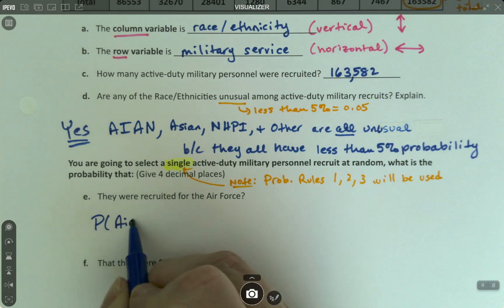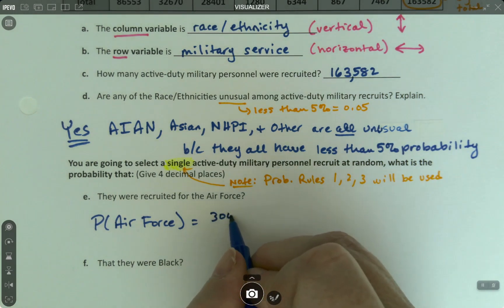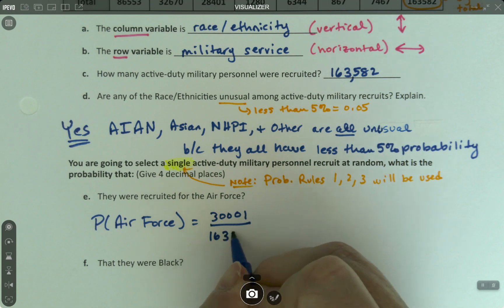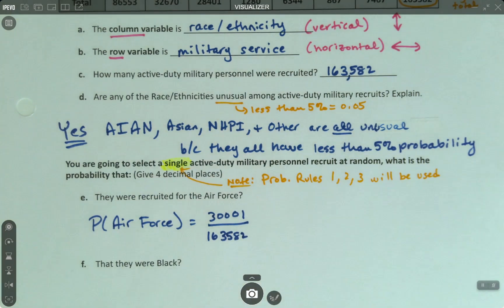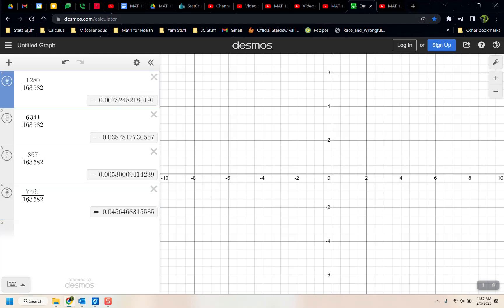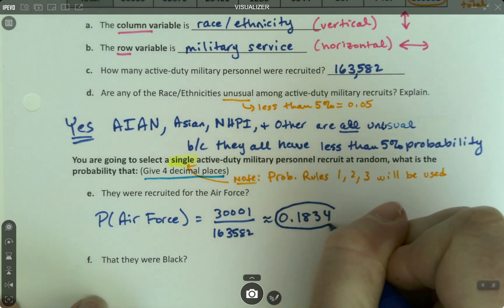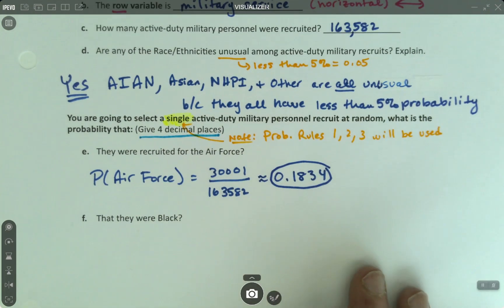So they want to know, what's the probability of being recruited to the Air Force? Air Force. Well, Air Force would be 30,001 over 163,582. And you'll notice, you have no way of knowing what that is. But it does say right here, give four decimal places. So we will. So we are going to make decimals find this. And I already have this denominator set up, so I'm just going to stick with it. And 30,001 makes 0.1834. It's got an approximation sign because we're rounding there. And you're done.